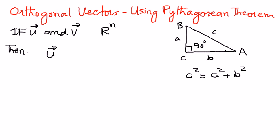The magnitude of vector U plus vector V raised to the power of 2 is going to be equal to the magnitude of vector U raised to the power of 2, plus the magnitude of vector V raised to the power of 2.